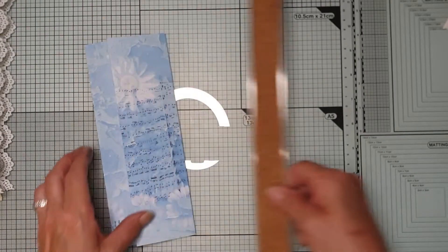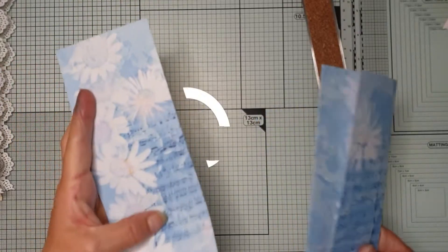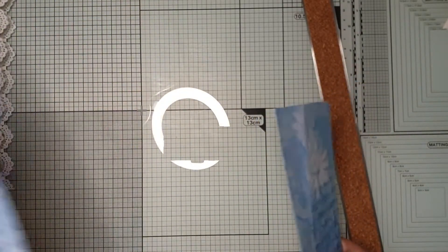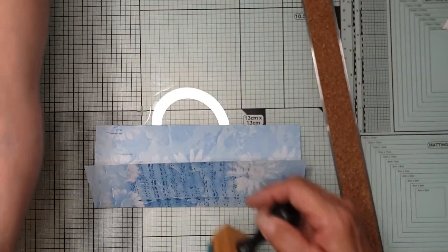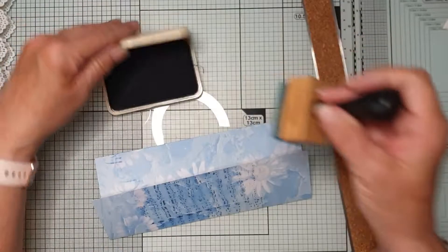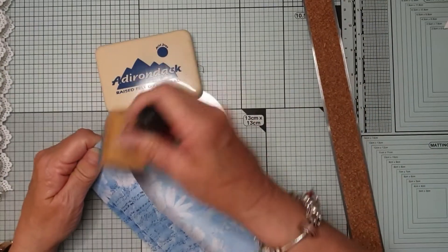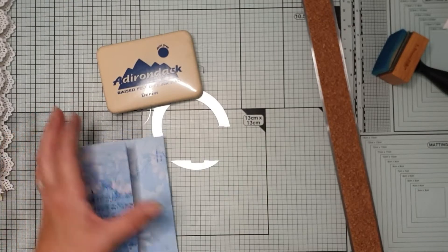So that's a full A4 page. And that's what I've got left. So you can make a tag, you can back tags or anything with that. And I am going to use my denim to ink around the edges. I am going to run the corners off first.